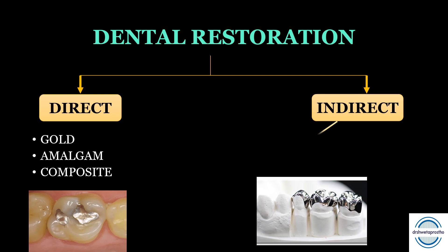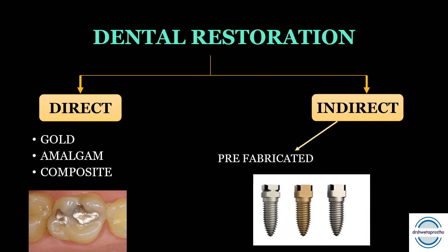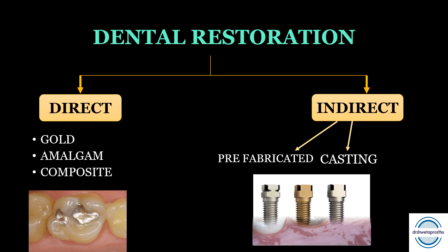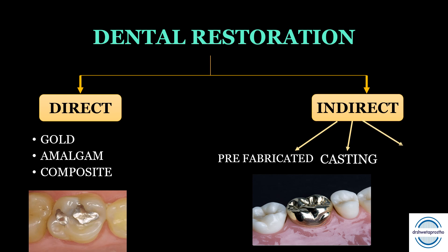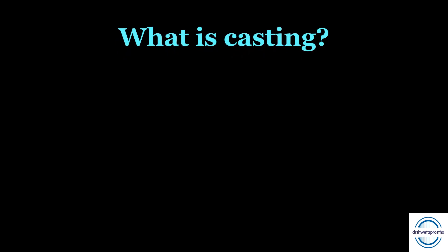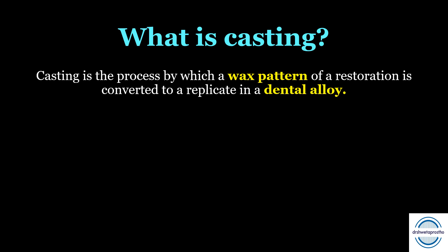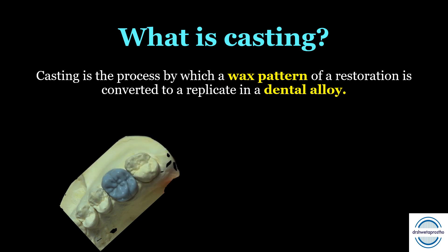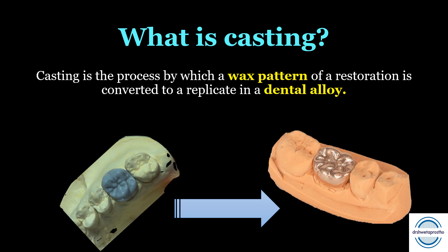These indirect restorations can be made in three ways: first, prefabricated ones like prefabricated post and core which are repairable; second, they are prepared by casting procedures which need certain casting alloys, which we will talk about in this video; third, CAD/CAM — computer aided design and computer aided manufacturing — which helps to fabricate dental restorations like crowns, inlays, and veneers. Casting is the process by which a wax pattern of a restoration is converted into a replica in a dental alloy.